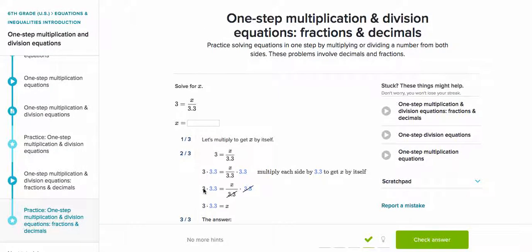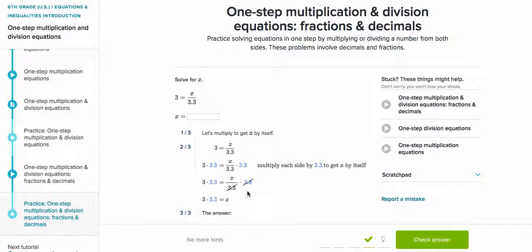So as you can see, in this step, in the beginning steps right here, the 3.3 gets cancelled out, so we're just left with x.